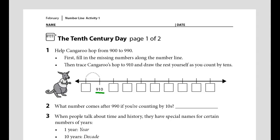Well, what's the number that comes right before that? What number comes after nine hundred ten? Fill in all of the boxes. Then trace Kangaroo's hop to nine hundred ten. This one right here. And then draw the rest of the hops yourself as you count by tens, all the way to the end.